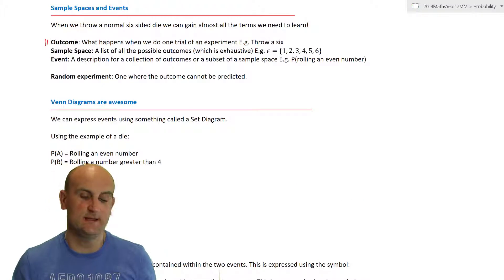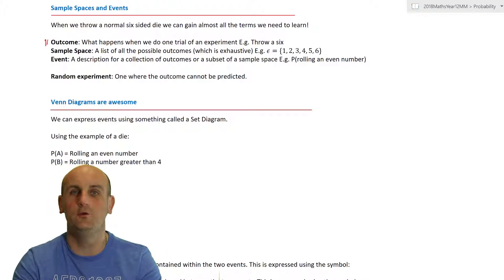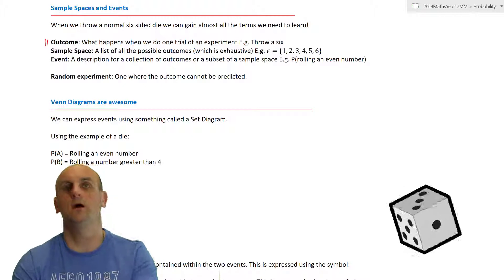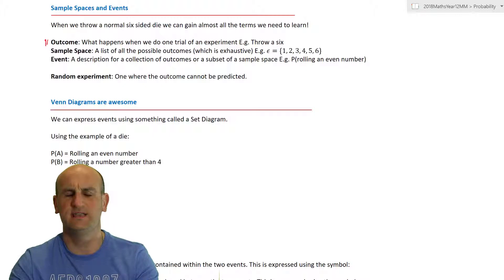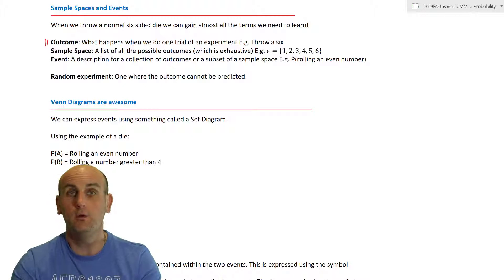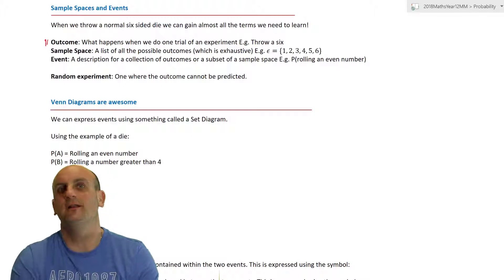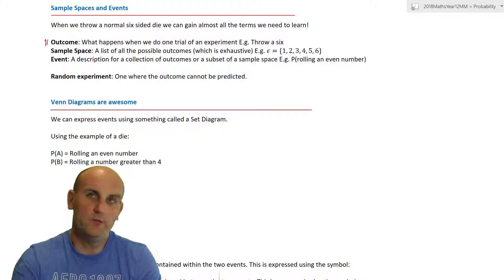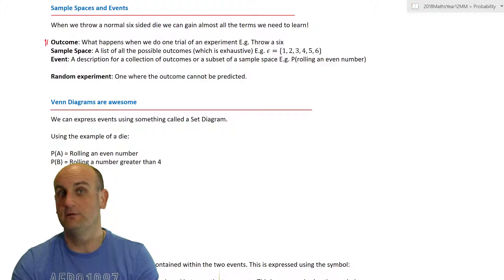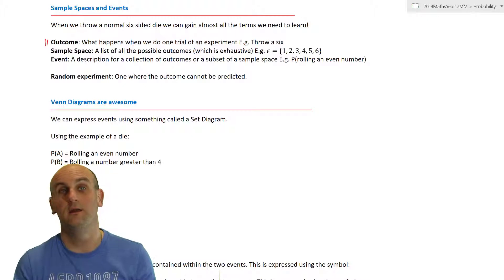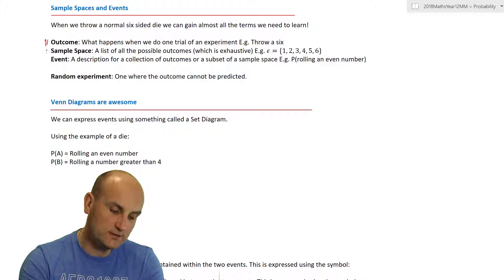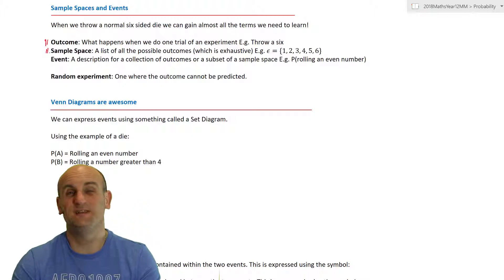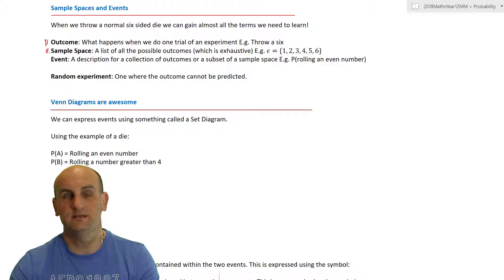Let's kick straight in with sample space and events. When you roll a die — a die is the singular of dice — and I roll it once and see what comes out, that's my outcome. Roll it once and get a six? A six is an outcome. A sample space is basically just a list of all the different possible outcomes.